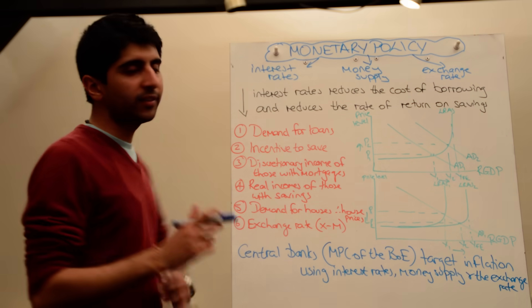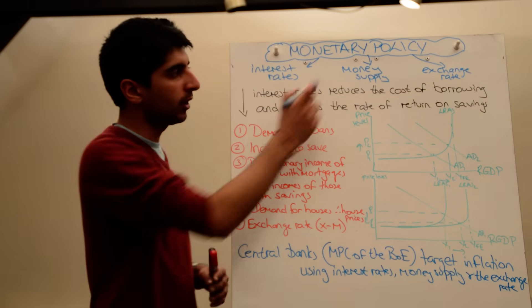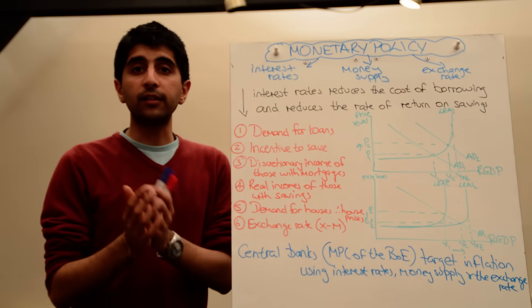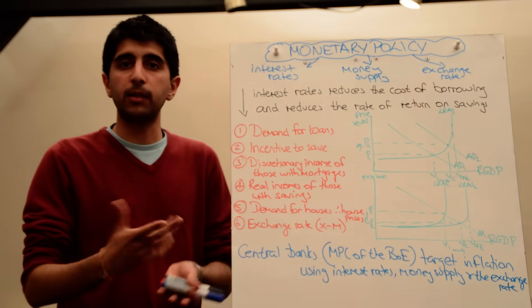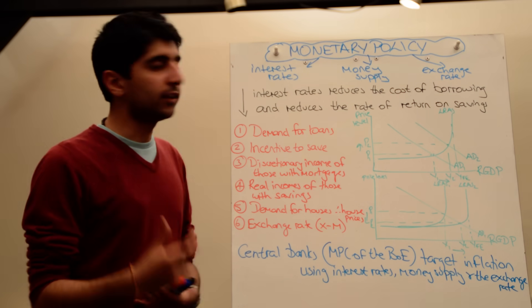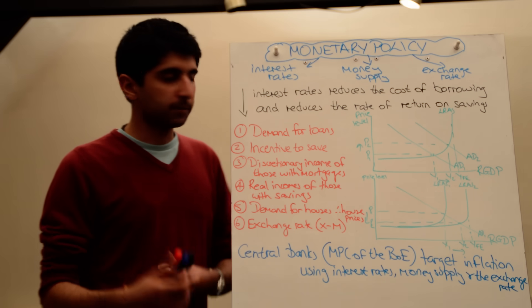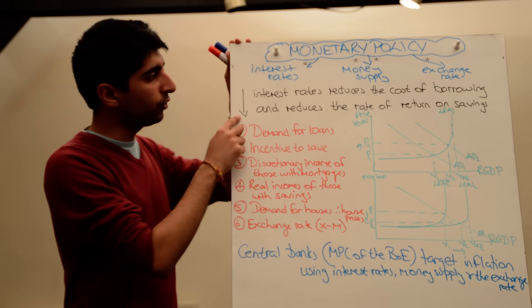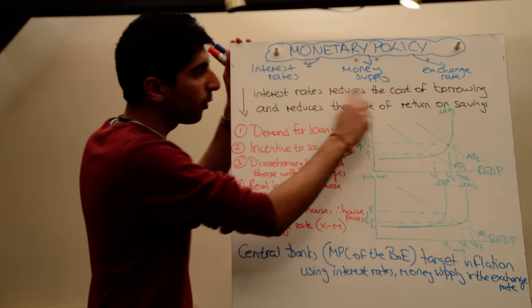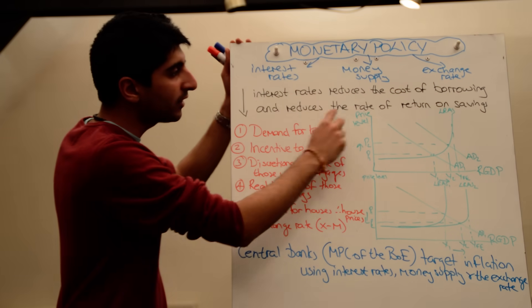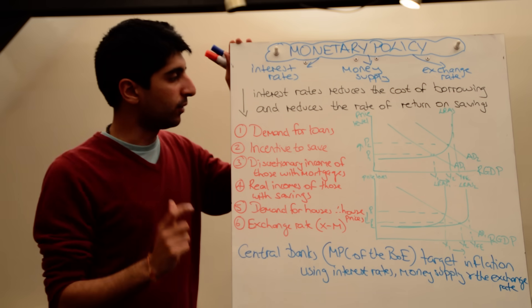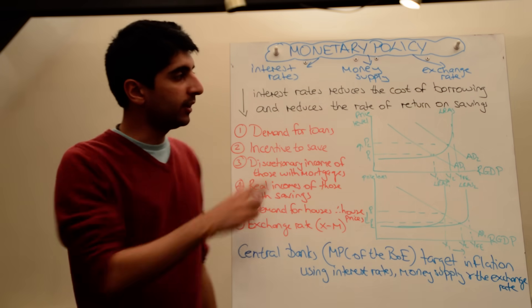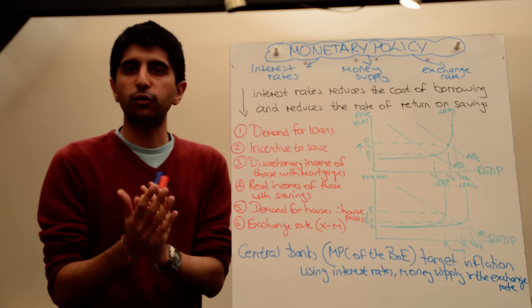Let's isolate interest rates, because they very much are the big daddy. Interest rates are very simply defined as the cost of borrowing — the price of money, the cost of borrowing money, and the rate of return on savings. When interest rates are reduced, the cost of borrowing reduces, and the rate of return on saving decreases as well. You need to be able to explain that and show your understanding of what interest rates mean.